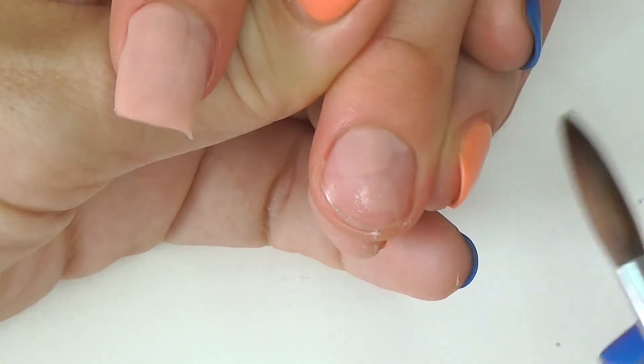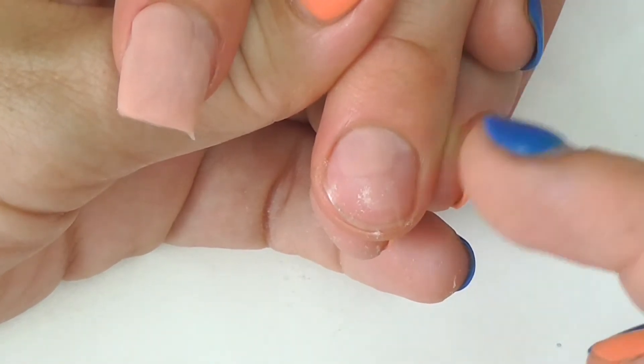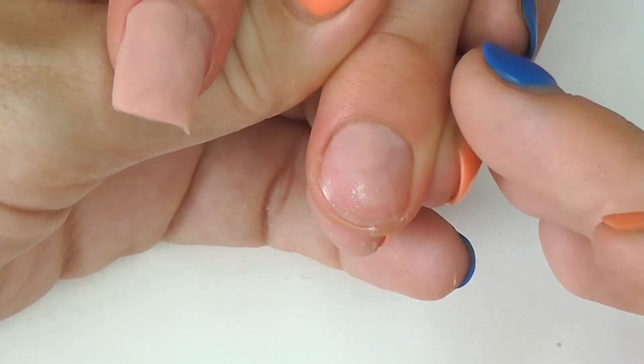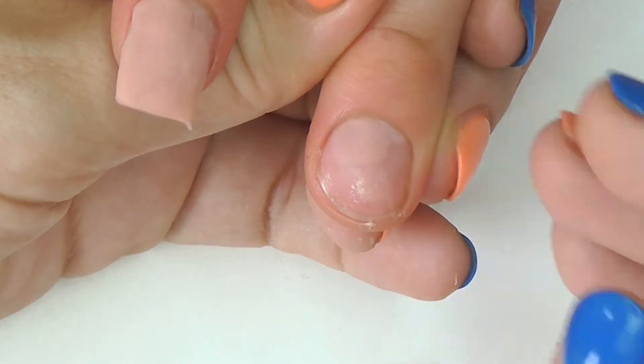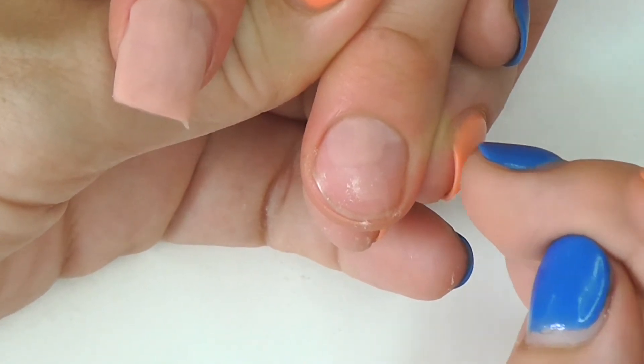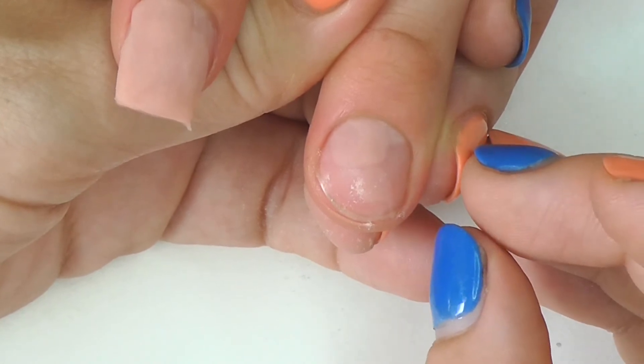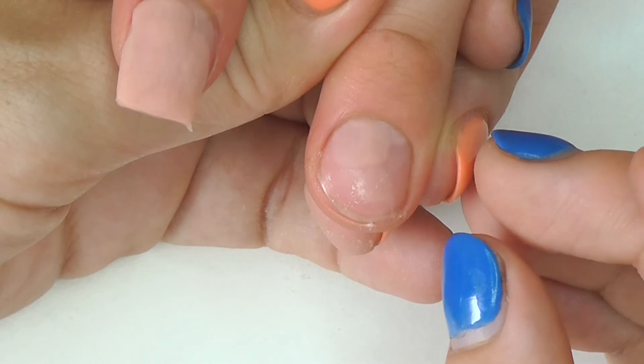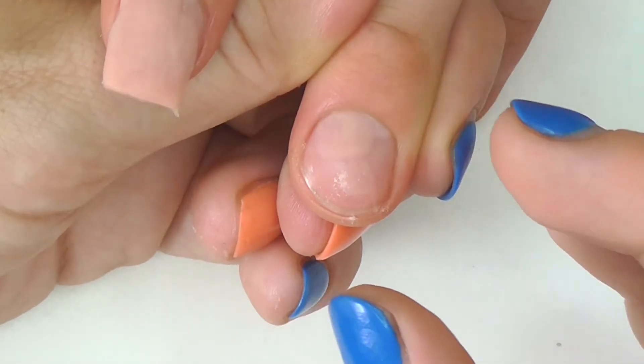When I was brand new I used to work way too wet because it looked smoother and I thought that that made prettier nails when really actually it was flooding and I had lifting on every single client and I didn't know why. Well I can tell you now that it was because on every client I worked so wet to try and get a smooth finish but I just created a lot of backfill work for me when they came back. So try and avoid it all together by working with correct ratios.